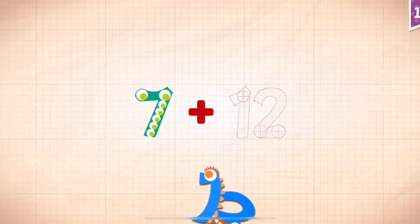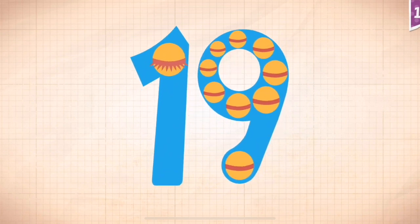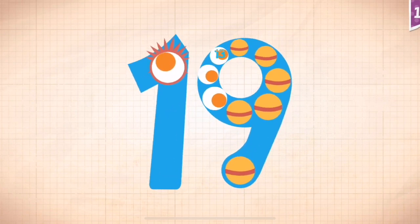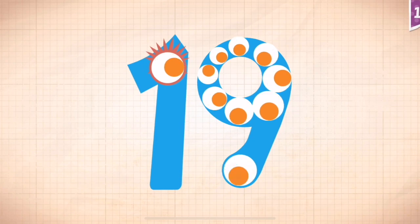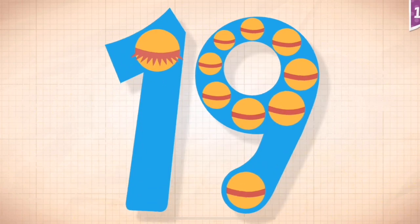7 plus 12. 7 plus 12 equals 19. 11, 12, 13, 14, 15, 16, 17, 18, 19. 19.